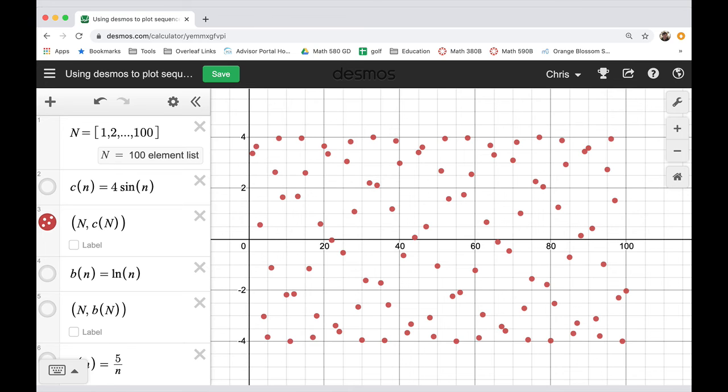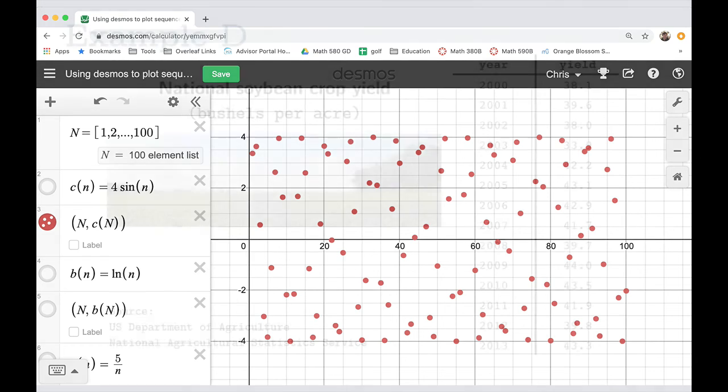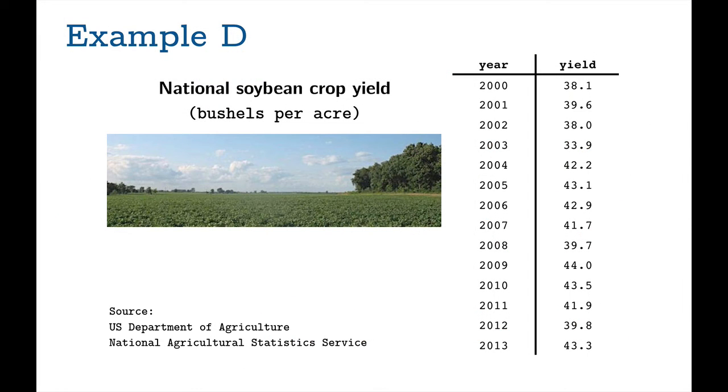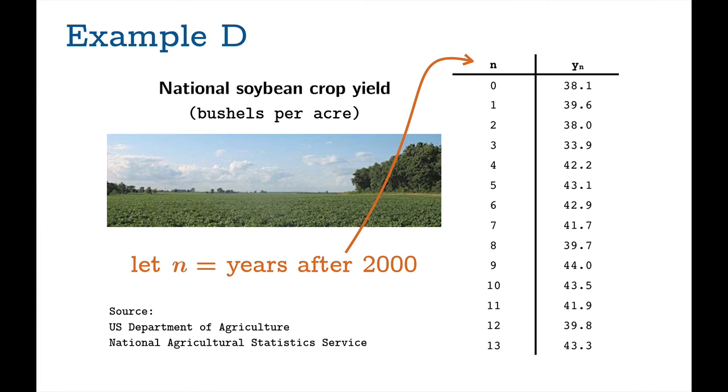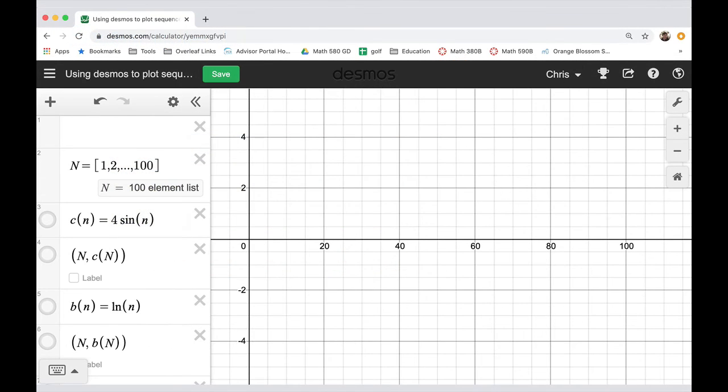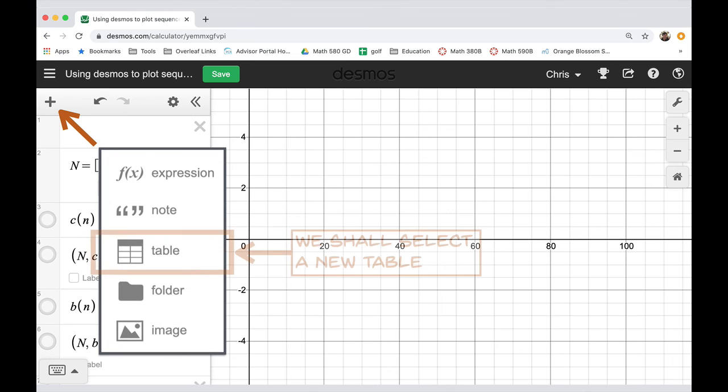And finally, let's turn to some data. So here's soybean data—national soybean crop yield for our collection of years. Don't forget you can always reset your index to be reasonable. We don't want to use these four-digit numbers for indices, so let n be the years after 2000. We'll reset these indices to be reasonable numbers. Now within Desmos, what we'll do for a small table like this is we will select this plus sign and select a new table.